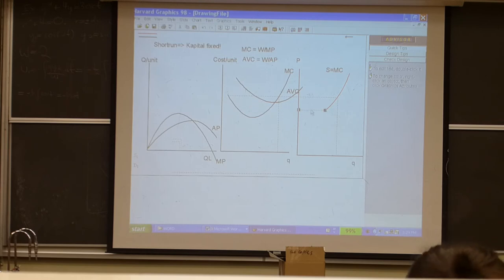Given the optimal output, you find at that output the average cost at that output. It is not at the minimum. Suppose this was the price. This would be the output right here. Price equals marginal cost. What is the average cost at that output?